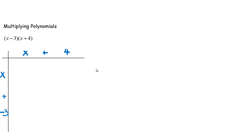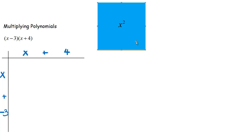Now I need to introduce my algebra tiles. This large piece is x squared — the reason it's considered x squared is because the length and width of this square are both x. We don't know the value of the length, so we name it x, and x times x equals x squared.